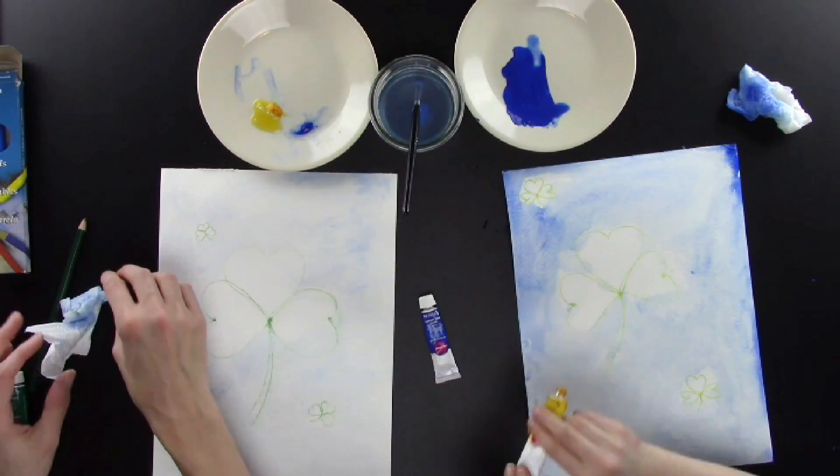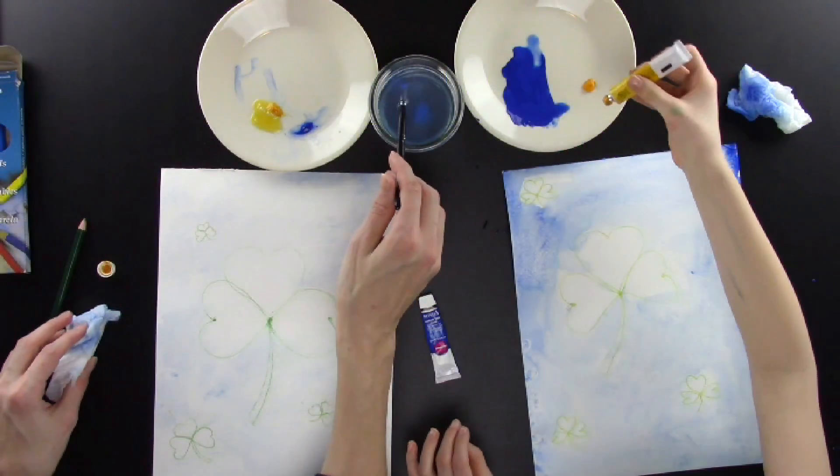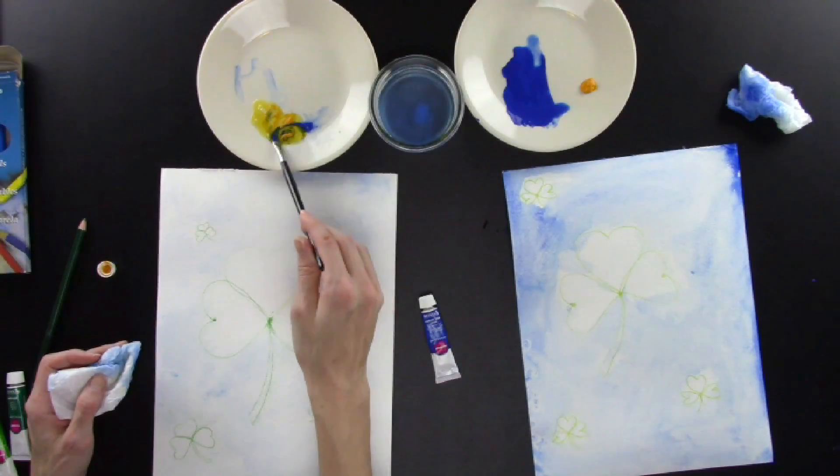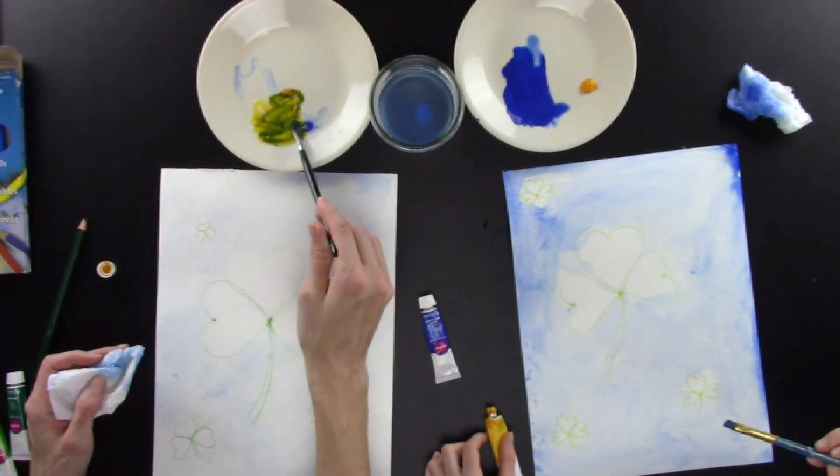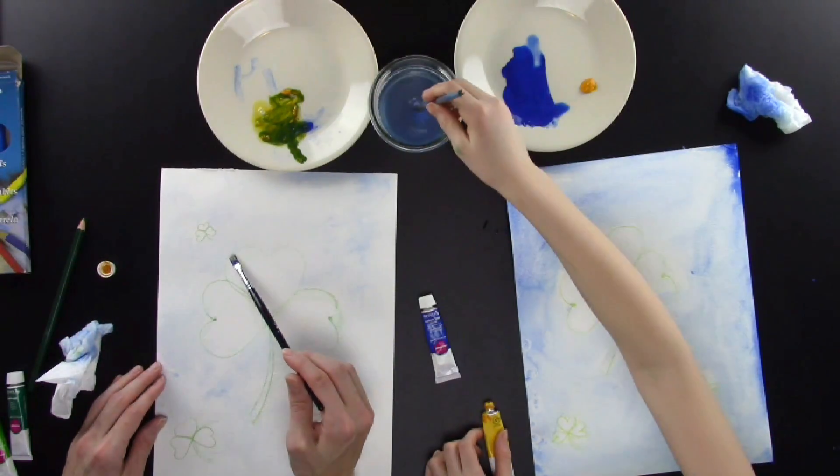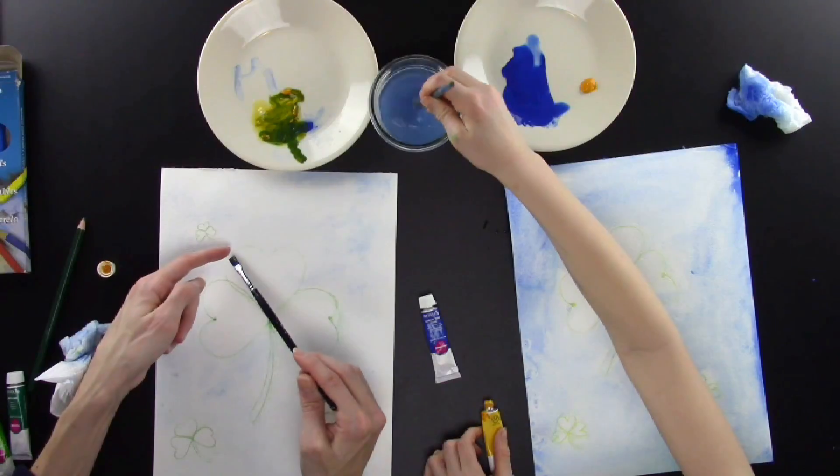Step 3: Paint shamrocks. Now I'm going to give myself some yellow paint and I'm going to mix it with my blue to make a green color. If you don't like your green color, you can choose a different yellow or a different blue to mix.